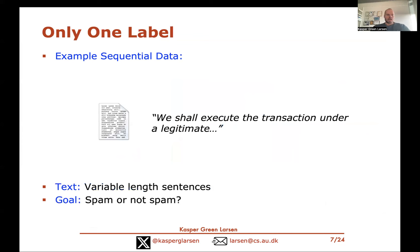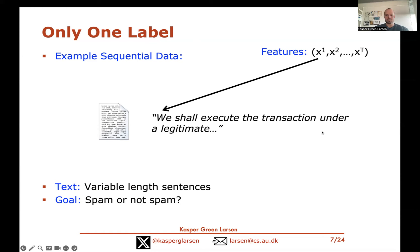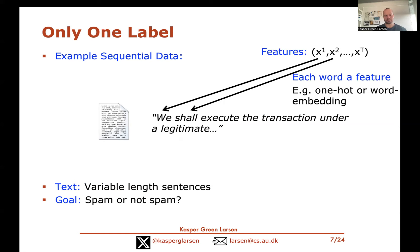Another thing you might encounter is that text is also very sequential data where you could consider using a recurrent neural net. For instance, say you want to train a spam filter that is fed sentences or emails, and it has to predict whether an email is spam or regular. These are clearly variable length sentences, so it makes sense to use a recurrent neural net. You need to decide on features - a natural choice is a feature for every word, representing each word as a fixed-length vector using word embeddings such as continuous bag of words, skip-gram, or one-hot encodings.